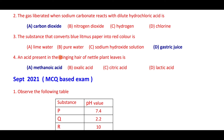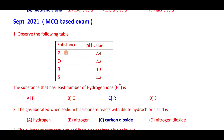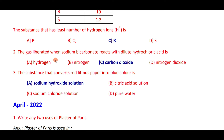The acid present in the stinging hair of a metal plant (nettle) leaves is methanoic acid. The gas liberated when sodium bicarbonate reacts with dilute hydrochloric acid is carbon dioxide.